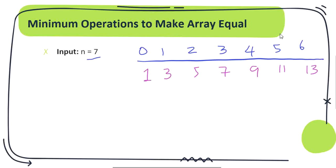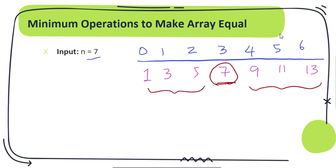Clearly the optimal solution is to fix the middle number and try to replace the rest — the first half and the second half — to equal the middle number. Converting the first half and second half to the middle number is the only way to get the optimal or minimum operations. Here the middle number is 7, so we are going to convert the rest of the array to 7.